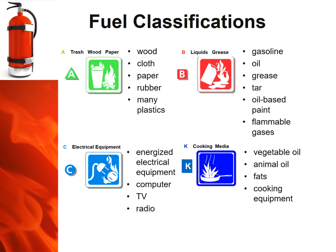Fires are classified according to the type of material that is burning — for example, paper, grease, or electrical equipment. It's very important to understand the four different fire or fuel source classifications. Understanding this will allow you to correctly use the right fire extinguisher. If you were to use the wrong type of fire extinguisher on the wrong class of fire, you may not be able to control or even extinguish the fire.